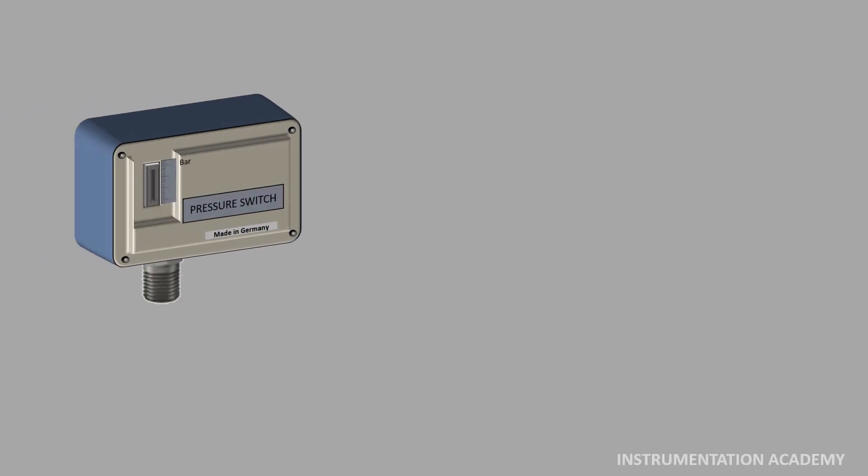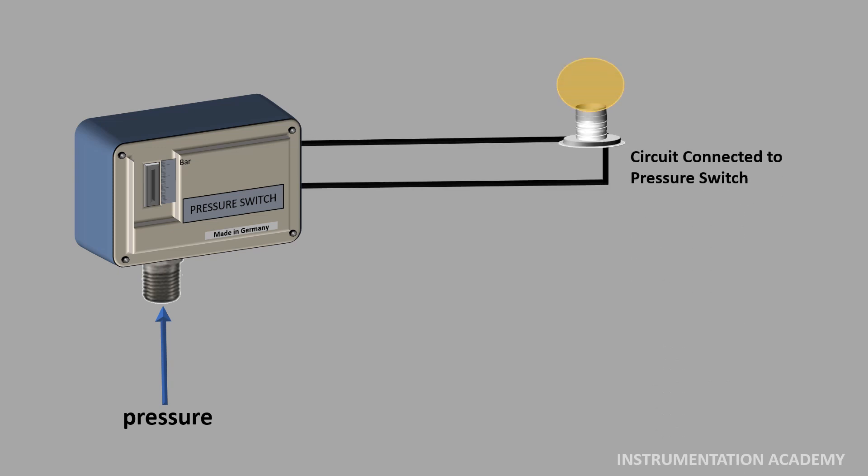As the name indicates, pressure switch is a switch that operates using pressure. Pressure switch is a device that turns an electrical circuit connected to it on or off when a preset pressure is reached on its input.